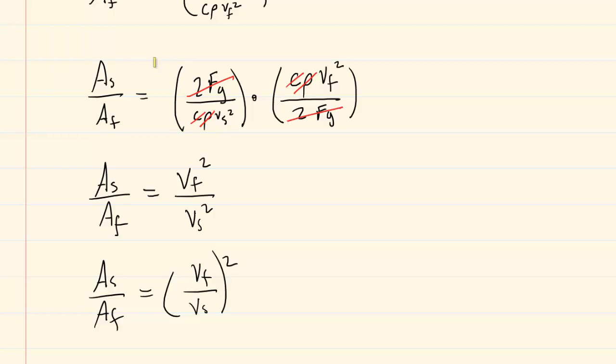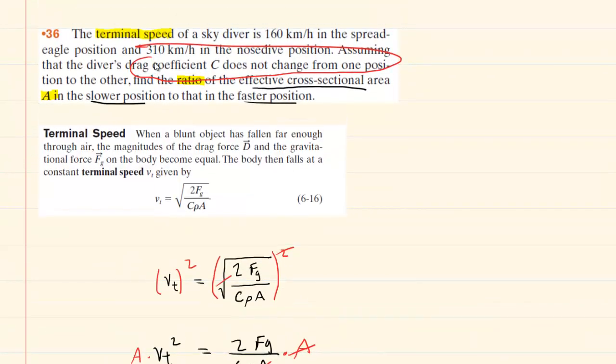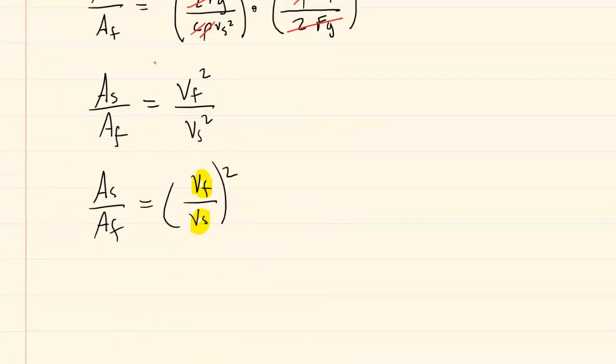Now we're ready to plug in. We just need to plug in the terminal speed at the faster speed and the slower speed. The faster speed was 310 kilometers per hour and the slower was 160 kilometers per hour. And then this will all be squared.